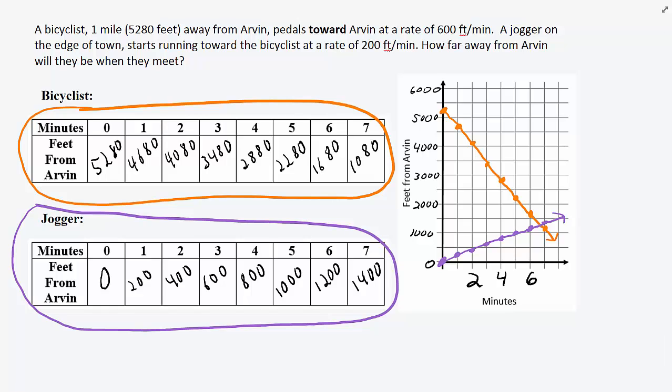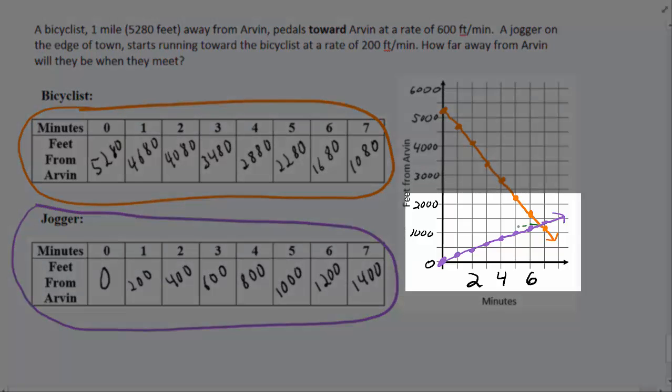Using the graph, we can estimate how far away from Arvin they will be when they meet. It looks like they will meet about 1,300 feet from Arvin.